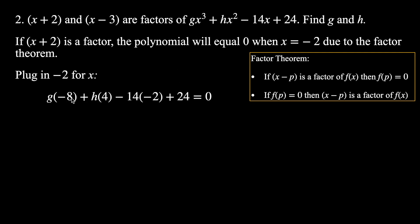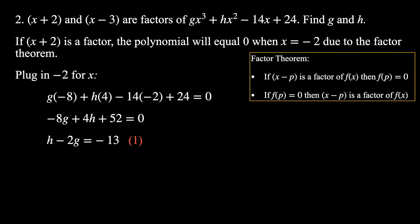Plugging in x = −2: (−2)³ = −8, (−2)² = 4, and we get −8g + 4h − 28 + 24 = 0, which simplifies to −8g + 4h + 52 = 0. Wait — simplifying: −28 + 24 = −4... actually the terms give −8g + 4h + 52 = 0. Dividing through by 4 and rearranging gives h − 2g = −13. This is equation 1. Then since x − 3 is also a factor, we plug in x = 3 for a second equation.